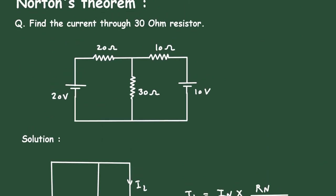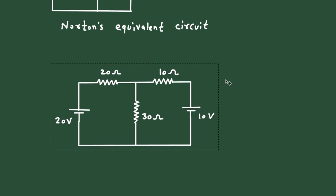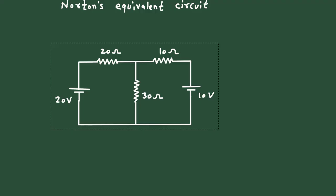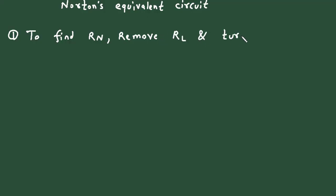Now let's see the question. First of all, let's find the value of Rn. Step number 1: to find Norton's resistance Rn, remove Rl and turn off all independent sources.